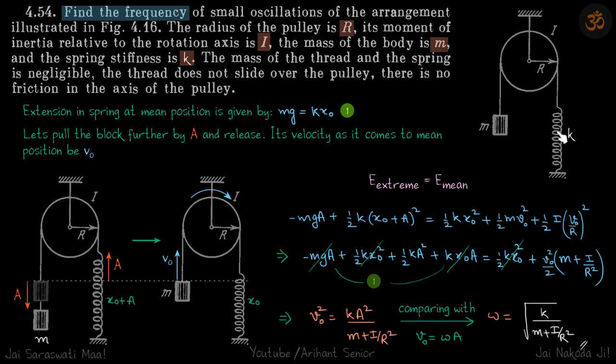We have this spring-mass system, and the pulley also has a moment of inertia of I. So when we shift this mass a bit and release, what will be the frequency of oscillations?